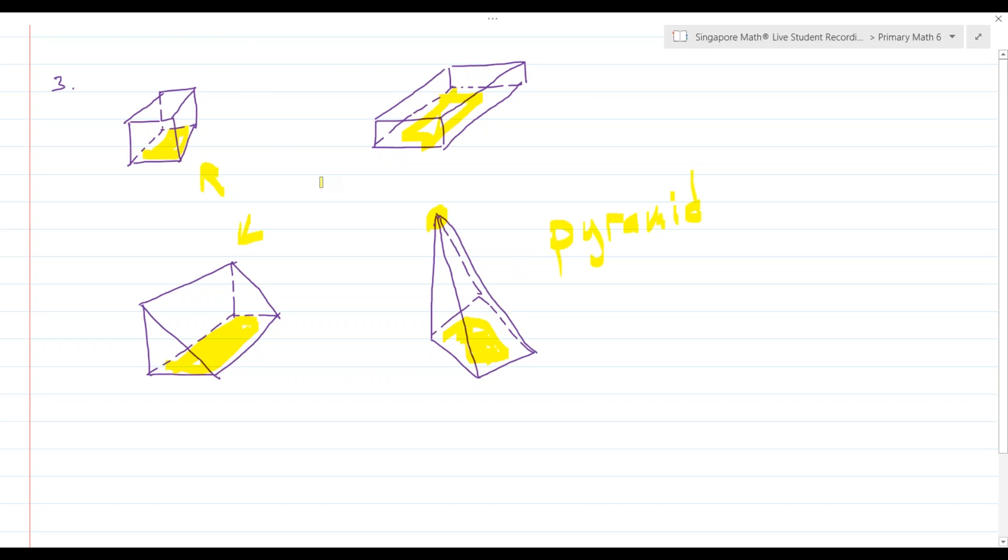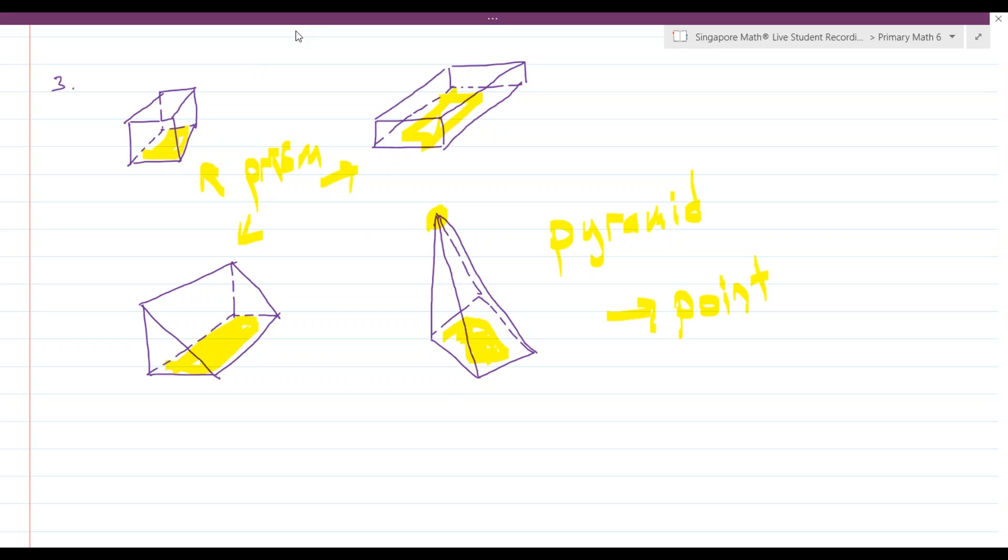All of these are prisms. A pyramid goes to a point, and the prism has all the bases the same, or has two bases that are the same, which is why I don't really need to call that a base.